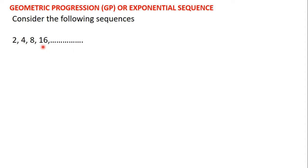Let's consider the following sequences. The first one has terms 2, 4, 8, and 16. If you look at this sequence carefully, we can see that multiplying 2 by 2 gives 4, multiplying 4 by 2 gives 8, and multiplying 8 by 2 gives 16. So to get the value of a term, all you need to do is multiply the preceding term by 2.